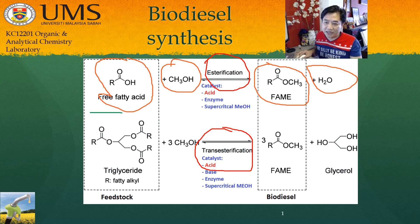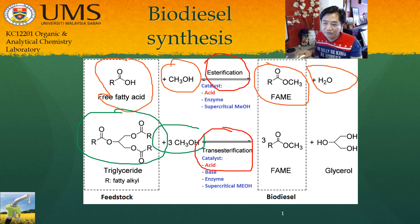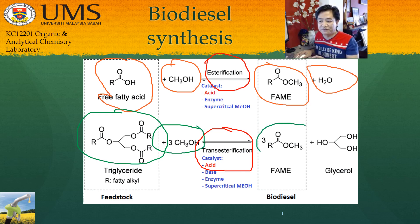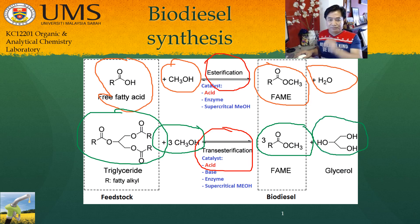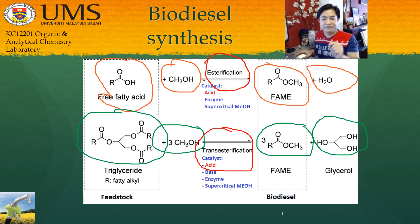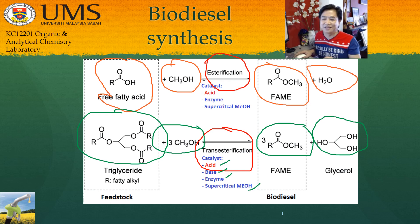The second process to produce biodiesel uses triglyceride. One mole of triglyceride reacts with three moles of alcohol, producing three moles of FAME and one mole of glycerol.